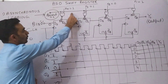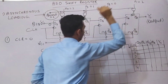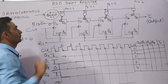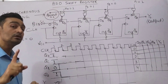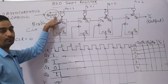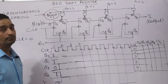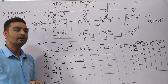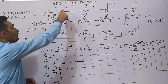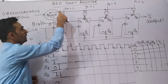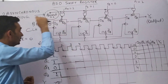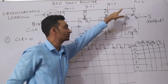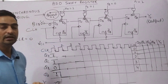Let us say the data to be loaded is 1, 1, 0, 1. To load this kind of arbitrary data, we require additional hardware, and this hardware is controlled by the preset pin. So whenever the present control pin is equal to binary 1, whatever data is at the x4 pin will be made available at QD, x3 data at QC, x2 data at QB, and x1 data will be made available at QA.